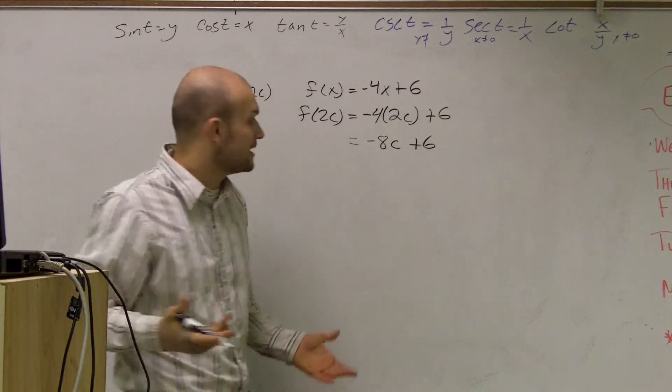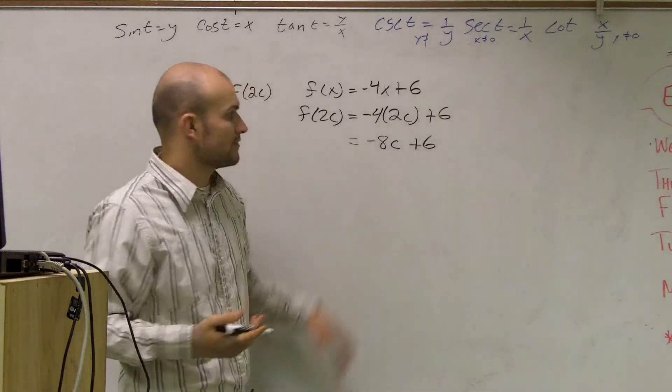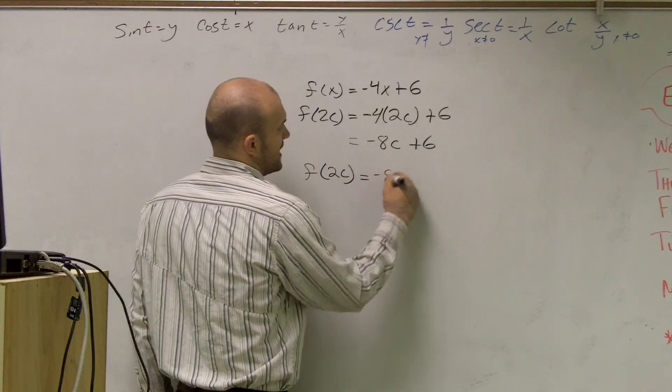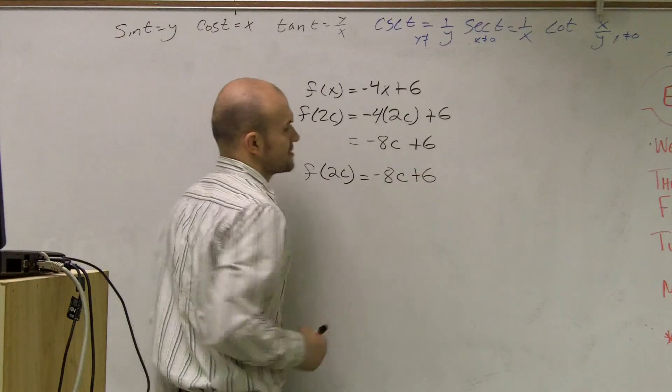I can't combine any terms any further, so therefore, that is going to be my final answer. So I can write f of 2c equals negative 8c plus 6.